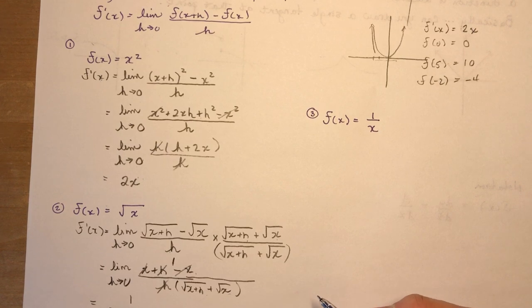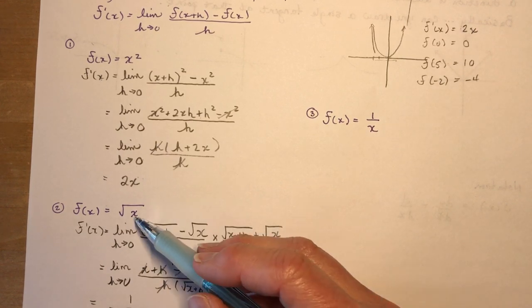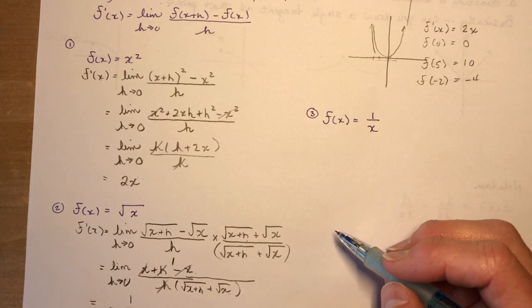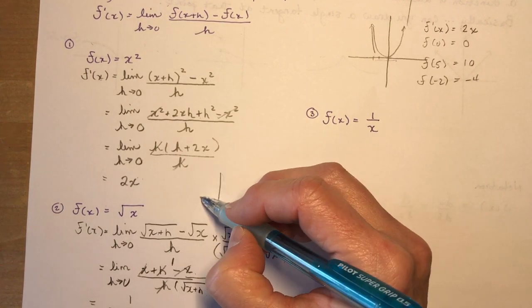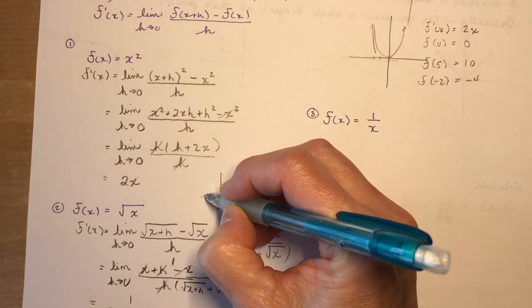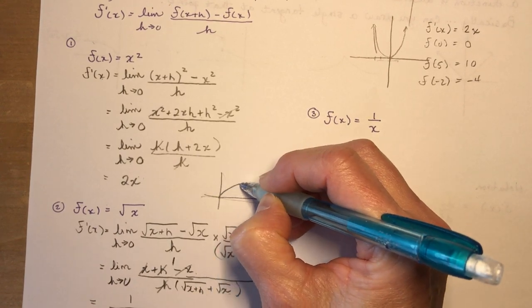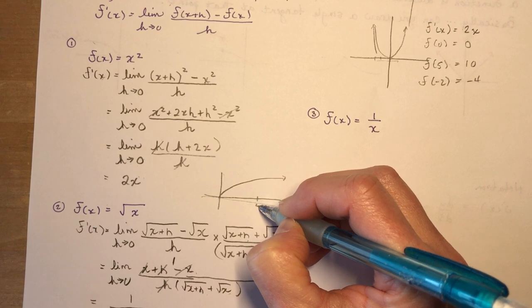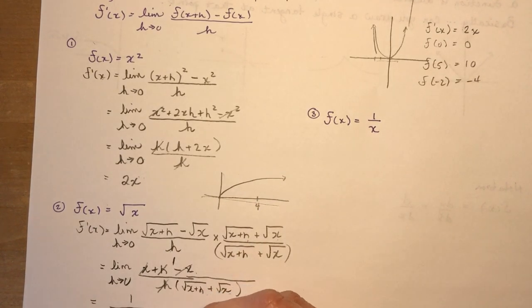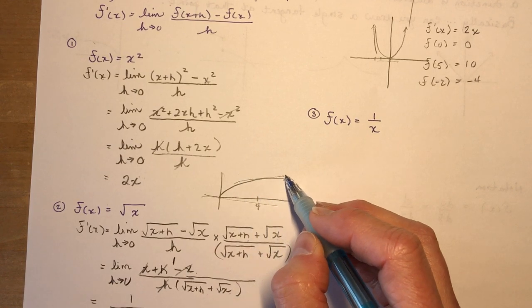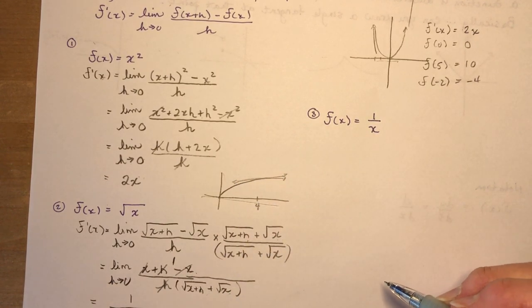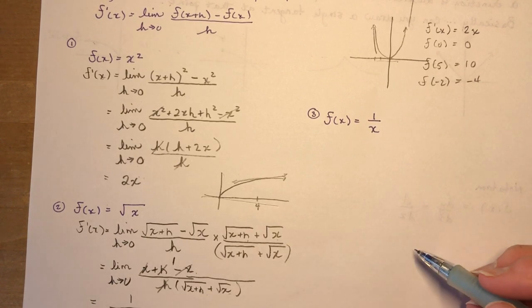So that means if I wanted to find the slope, let's draw a little function here of the root of x. So let's say I have the root of x here. I want to know what is the slope when x is 4. The slope when x is 4 is going to be 1 quarter. Look at that. So again, very powerful.